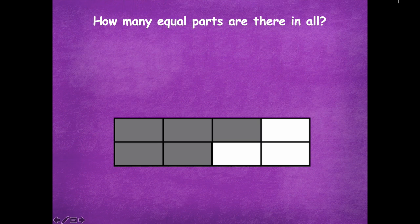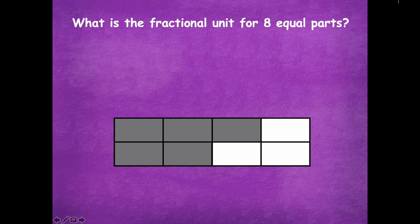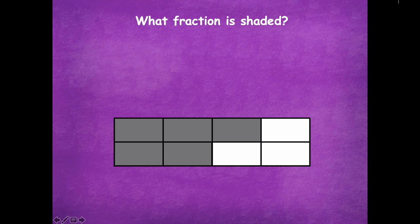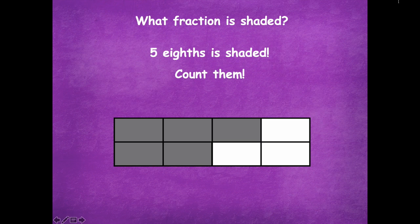Let's look at another one. How many equal parts are there in all? Eight. What is the fractional unit for eight equal parts? Remember, they always have to be equal — eighths. That's a tricky one to say; you've got to get that 'th' in there. What is each part called? One-eighth. What fraction is shaded? Five-eighths. Let's count: one-eighth, two-eighths, three-eighths, four-eighths, five-eighths.